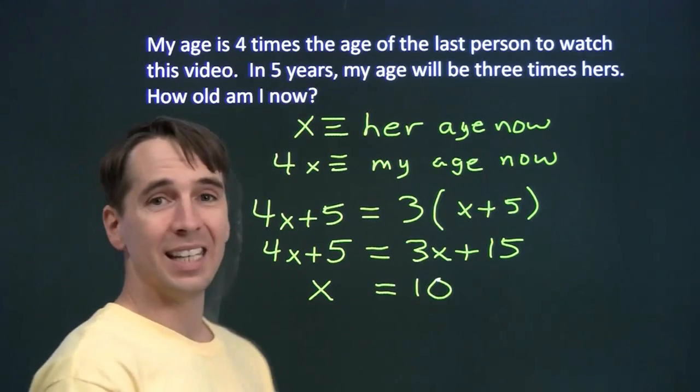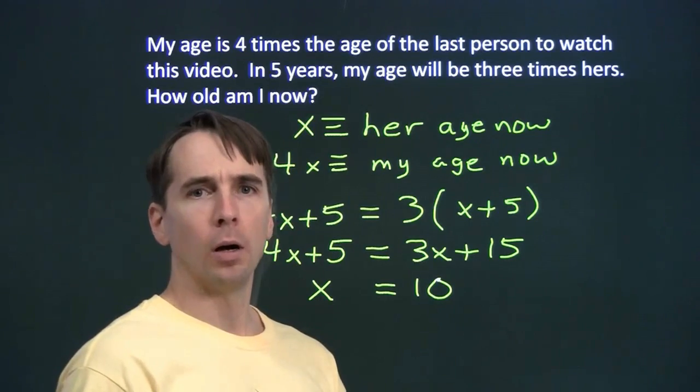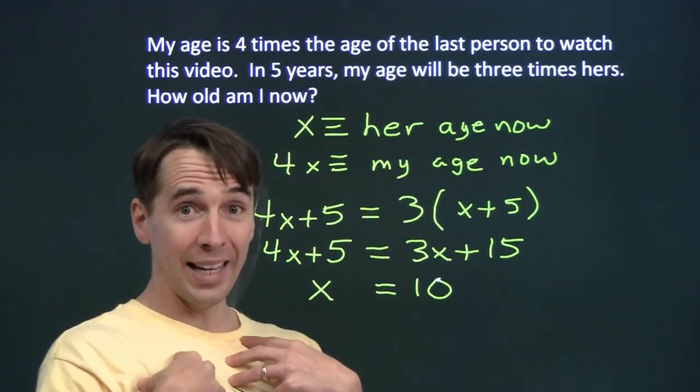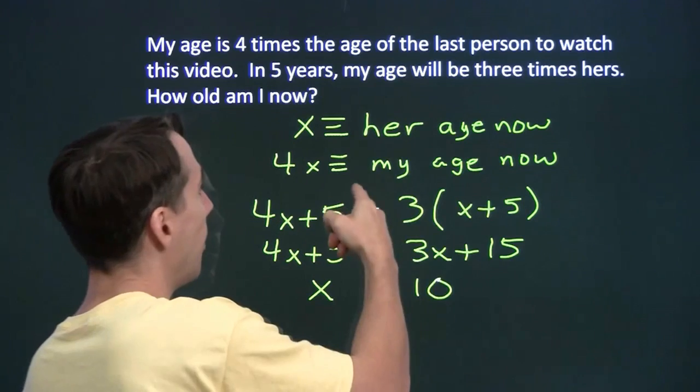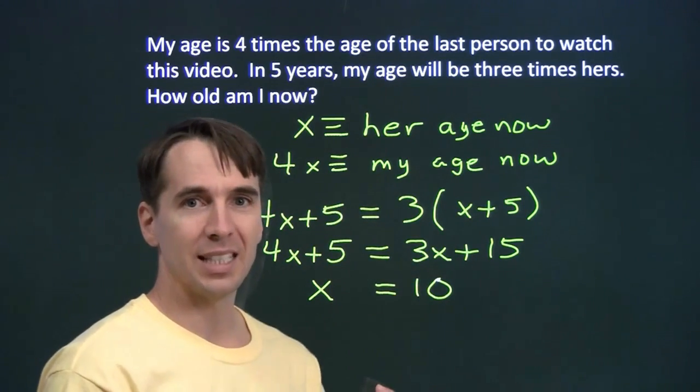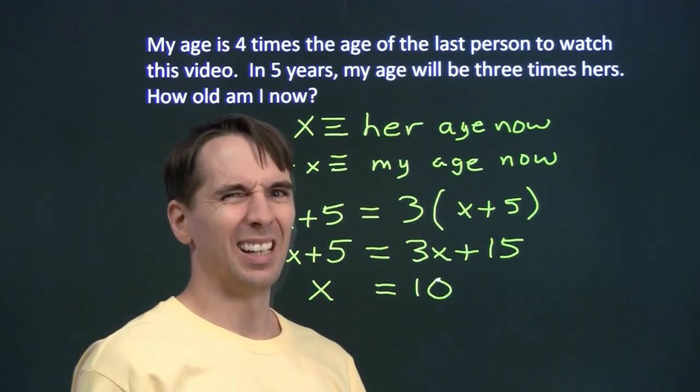And if you just circle that as the answer, you'll be wrong. The question asks how old I am. I'm certainly not 10 years old. My age now is 4 times 10 is 40. Yeah, I'm old.